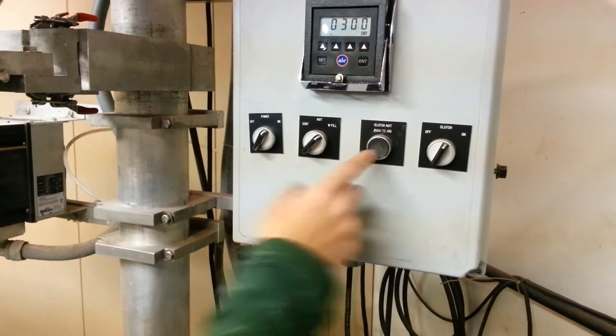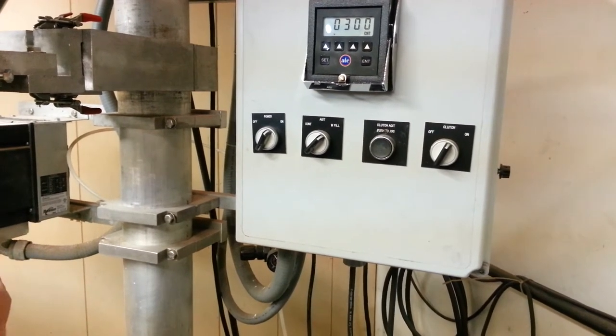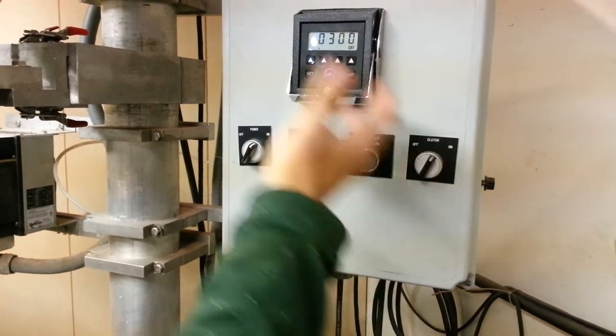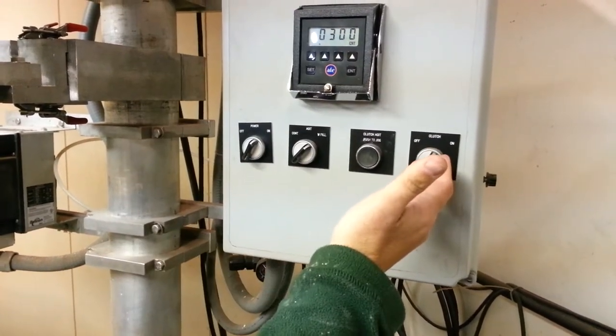We have a jog button that just turns the auger at the beginning or the end of a cycle to get it through the auger. And then the clutch - this is what drives your auger - is going to be in the on position.